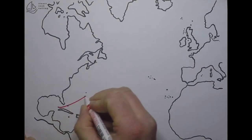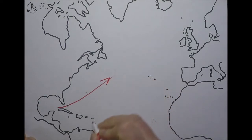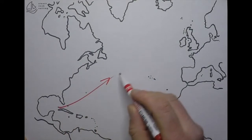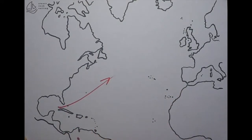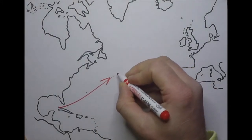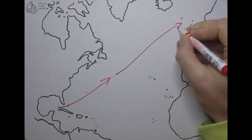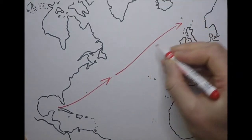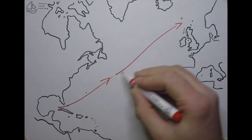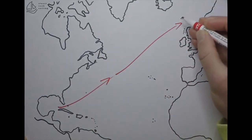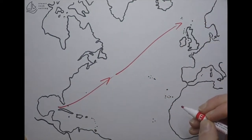The Gulf Stream transports warm water and waters of the North Atlantic. It then feeds into the North Atlantic drift, which continues that process of transporting warm water up into the far northeast corner of the North Atlantic.